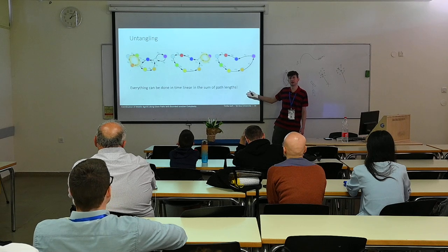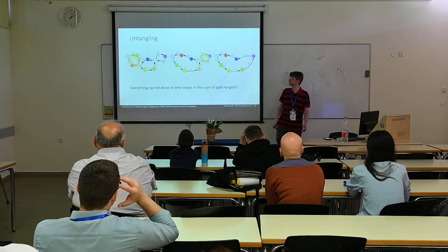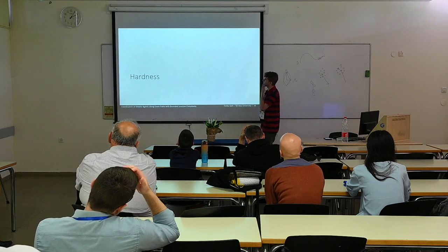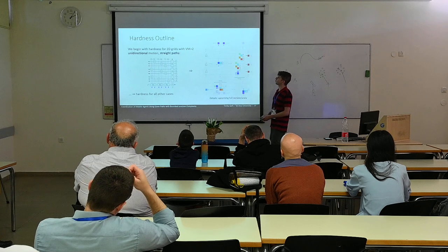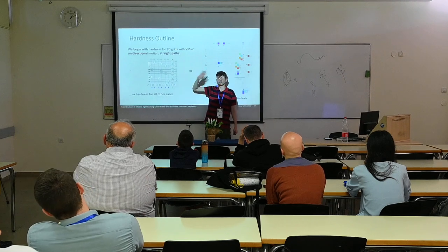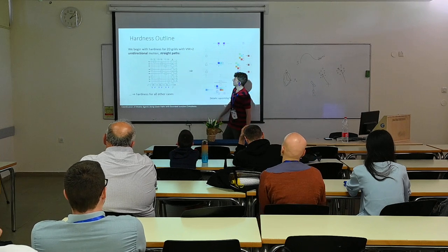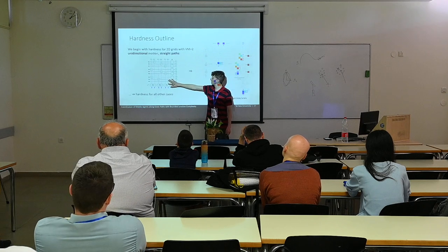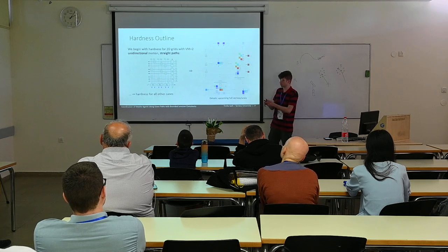The entire algorithm runs in time linear in the sum of path lengths — that's an efficient algorithm. Regarding hardness, those proofs are very technical, but we start by proving hardness for the case of two-dimensional grids with VM=2, unidirectional motion, and straight paths — a very distilled case. We then give the details of this construction and convert it to other variants for which we prove hardness.